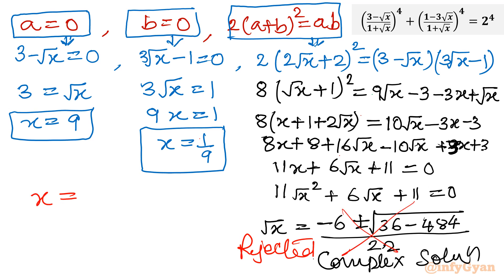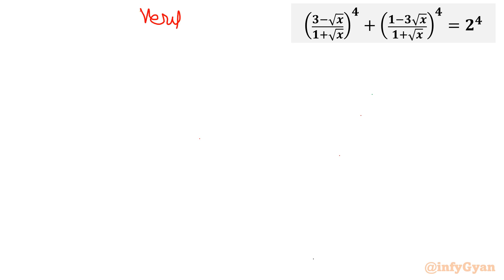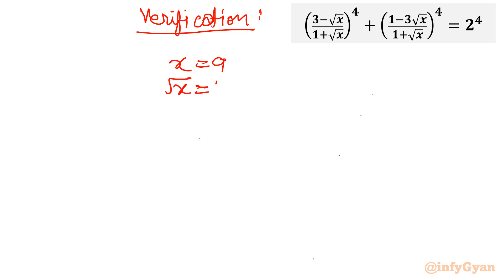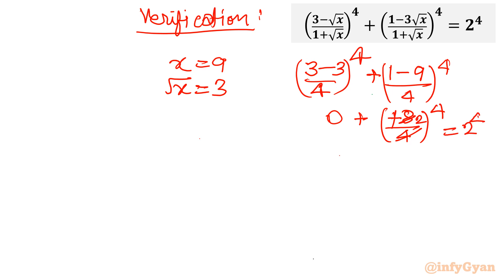So there are two solutions: x equals 9 and x equals 1 over 9. Let us verify both. Verification for x equal to 9: root x equals 3, so the first numerator is 3 minus 3 equals 0, meaning the first term is 0. The second term becomes (1 minus 9) over (1 plus 3)^4, which is minus 8 over 4 whole power 4. Since the power 4 is even, this is positive, giving (2)^4 equals 16, which equals the RHS. Hence verified.